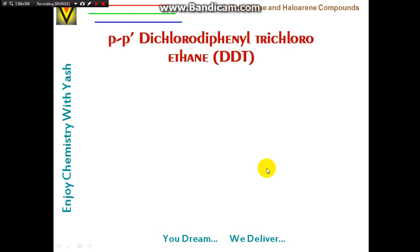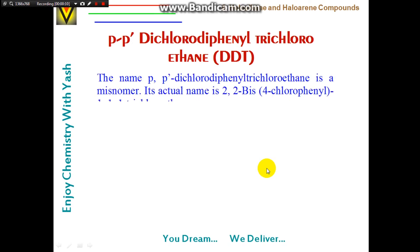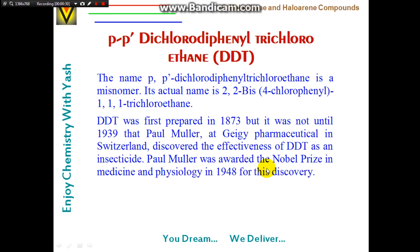DDT stands for para,para'-dichlorodiphenyltrichloroethane, though this is a misnomer. Its correct IUPAC name is 2,2-bis(4-chlorophenyl)-1,1,1-trichloroethane. DDT was first prepared in 1873, but it was not until 1939 that Paul Müller at Geigy Pharmaceutical in Switzerland discovered its effectiveness as an insecticide. Paul Müller was awarded the Nobel Prize in Medicine and Physiology in 1948 for this discovery.